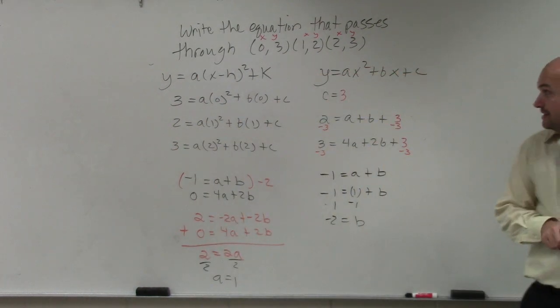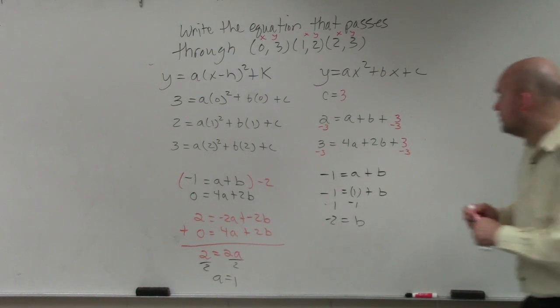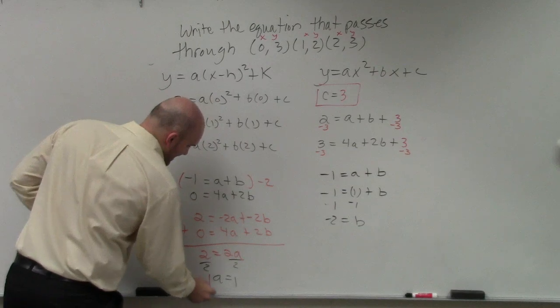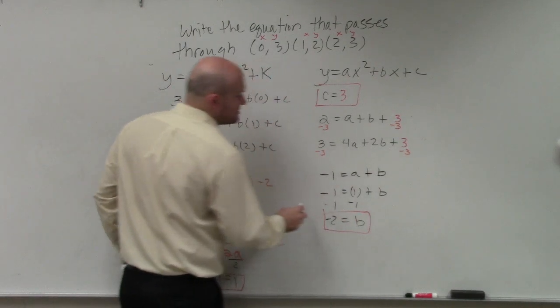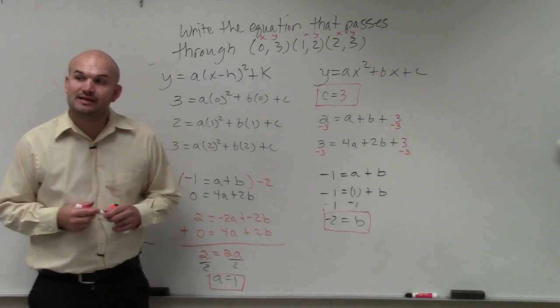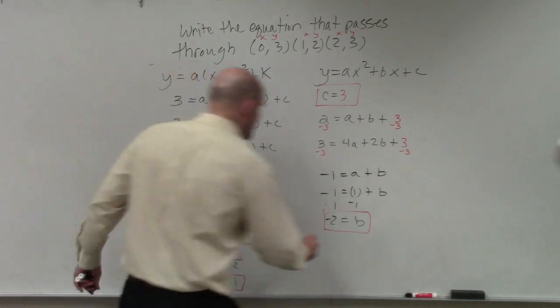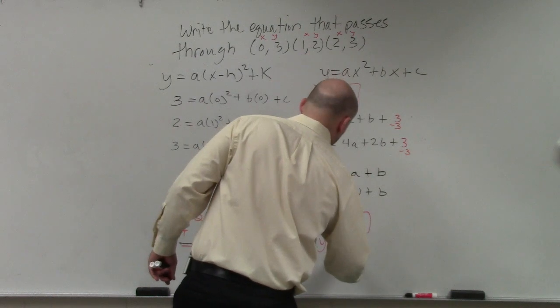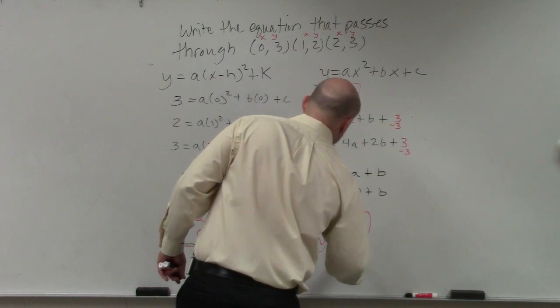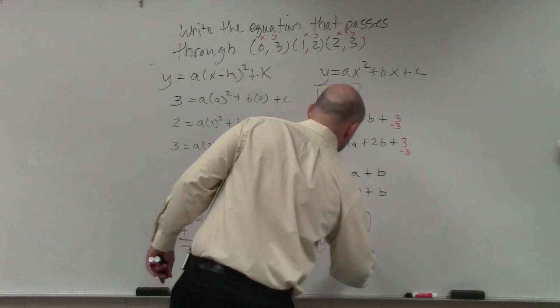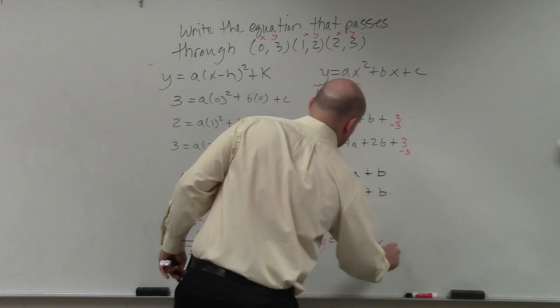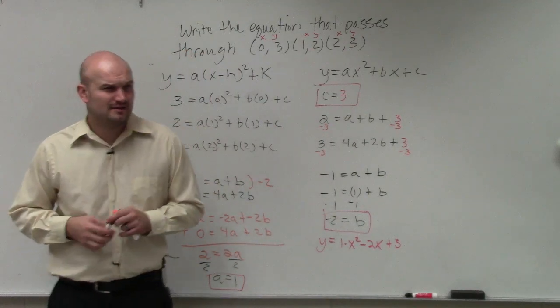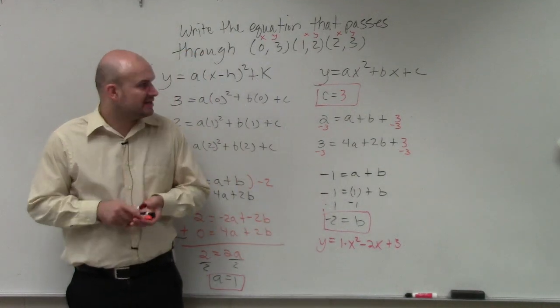So now, ladies and gentlemen, I know what c is, I know what a is, and I now know what b is. So now I can write the equation of the line. y equals 1 times x squared minus 2x plus 3. And do I really need to write the 1 in a? No, but I'll just leave it there so you guys can see that.